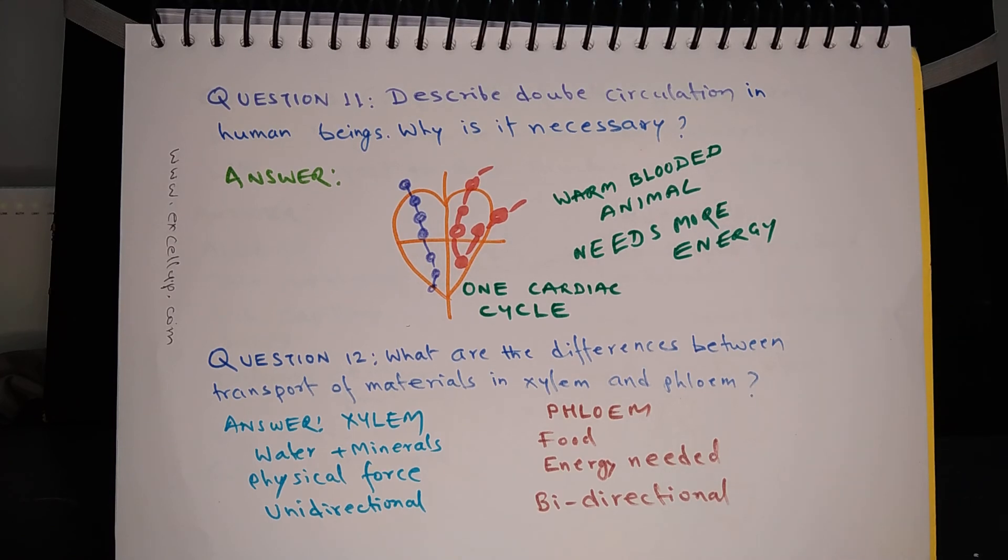In case of phloem, energy is required for transporting the substances, so this is the big difference. Then the movement is bidirectional. So food can move from leaf to storage organ of a plant, and it can also move vice versa, that is from a storage organ of a plant to a new leaf which may require more food in order to grow.